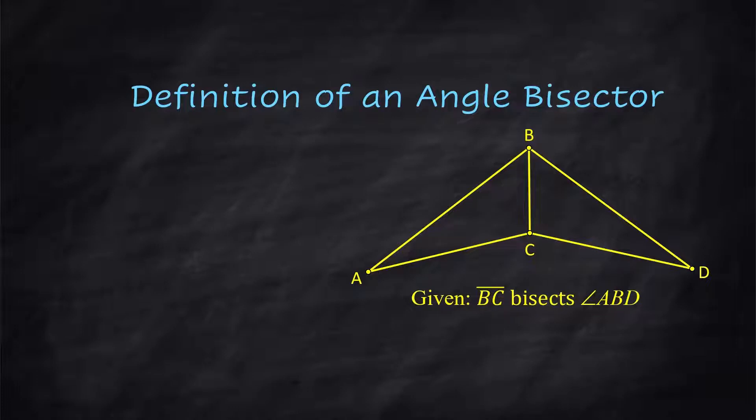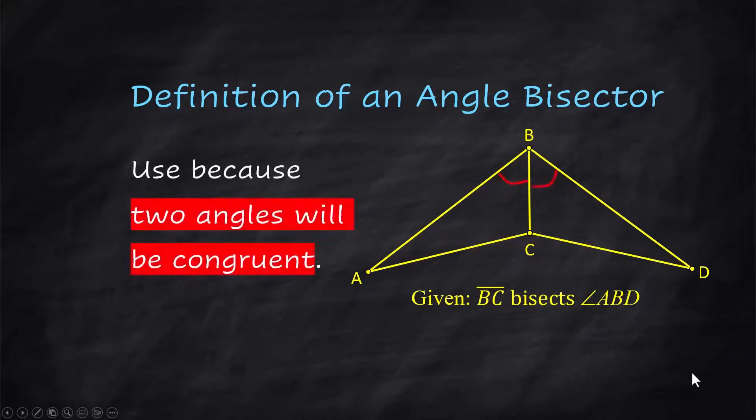Definition of an angle bisector. You have to be told there is an angle bisector, which we are right here. BC is bisecting angle ABD. And when you have an angle bisector, it means you have two congruent angles.